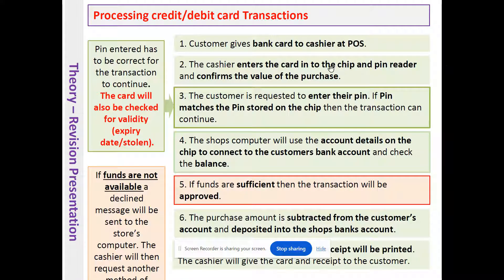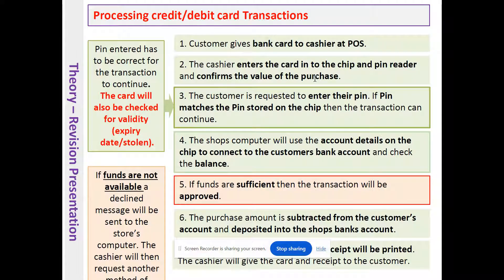When paying for goods, the customer gives the bank card to the cashier at the point of sale, or they will insert their card into the chip-and-pin reader. The cashier confirms the value of the purchase — for example, 55 pounds — before the payment is made. The first step for the customer, once the card has been entered into the chip-and-pin reader, is to enter their PIN. There is normally a four-digit PIN.